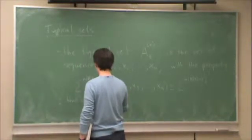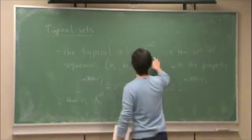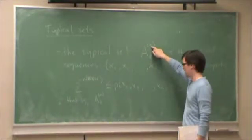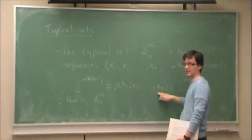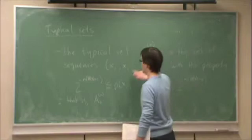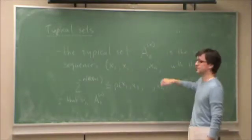The typical set, so you'll notice that we have epsilon and N here. Those are both parameters of this set, because N is the length of this sequence, and epsilon appears here and here.